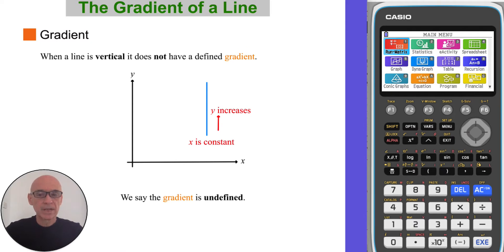When a line is vertical, it does not have a defined gradient. As y increases, x is constant. We say the gradient of a vertical line is undefined.